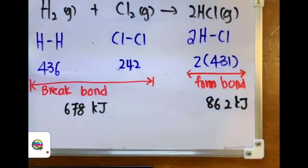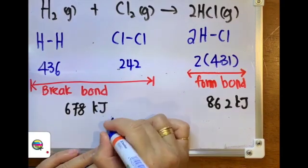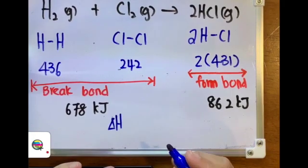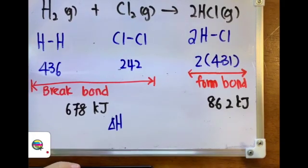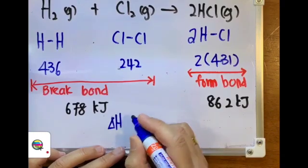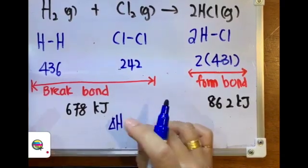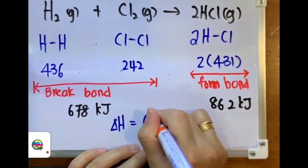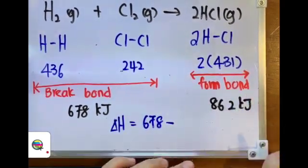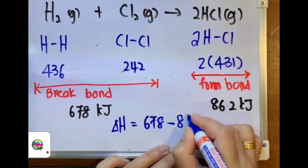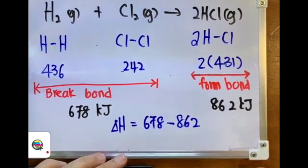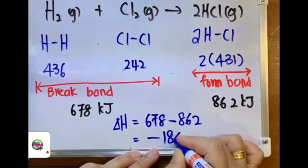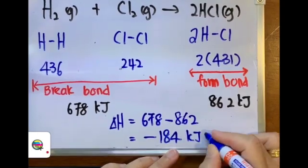The last step is to calculate the heat change. What is the heat of reaction that involves the formation of hydrogen chloride gas? We take the total energy needed to break the chemical bonds minus the total amount of energy released during the formation of chemical bonds, which gives us negative 184 kilojoules per mole.